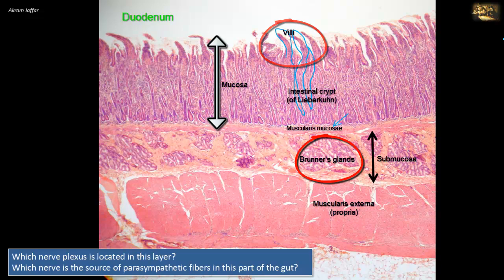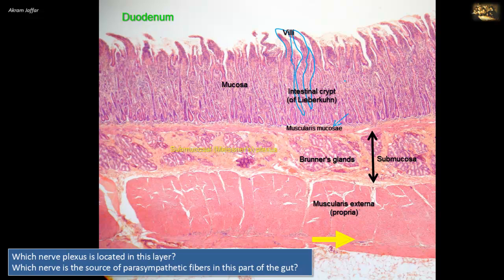In the GI tract, autonomic plexuses are present in two places: in the submucosa, and between the two layers of the muscularis externa. The submucosal plexus is called the Meissner's plexus, located in the submucosa as indicated in this slide. It supplies the mucosal glands, like those present in the duodenum, as well as the smooth muscles of the muscularis mucosa.